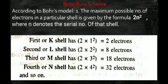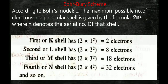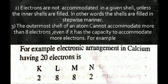The Bohr-Bury scheme describes how electrons are filled in shells. The rule is 2n² — the maximum number of electrons in a shell is 2n², where n is the shell number. For K shell (n=1): 2×1² = 2 electrons; for L shell (n=2): 2×2² = 8 electrons. The second rule: electrons cannot be accommodated in a given shell unless the inner shells are completely filled — fill K first, then L, then M. Third rule: the outermost shell cannot accommodate more than 8 electrons.